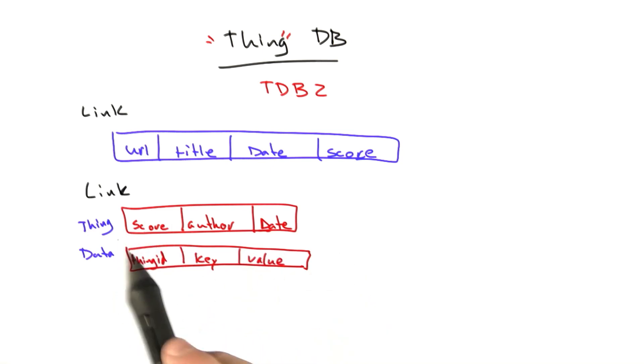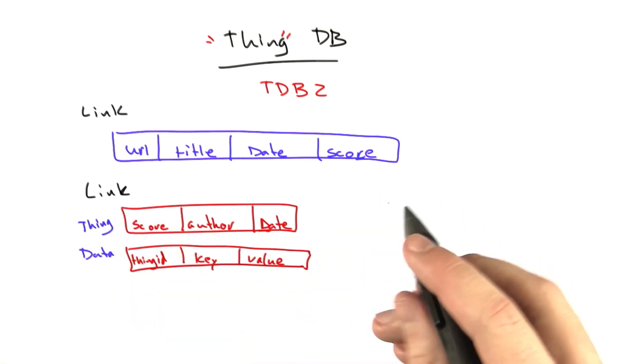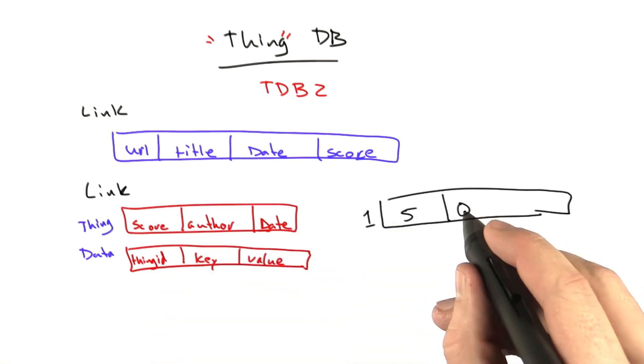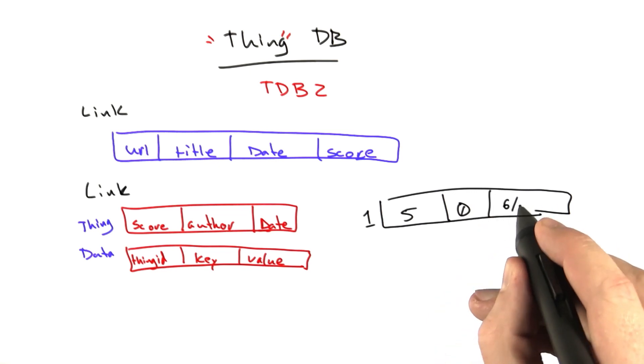So for a particular data type, for a link for example, a link might be represented like this. We'd have an entry in the Thing table. It might have a score of 5, and of course it has an ID of 1, an author of 0, that was my user ID, and a date of when it was submitted.